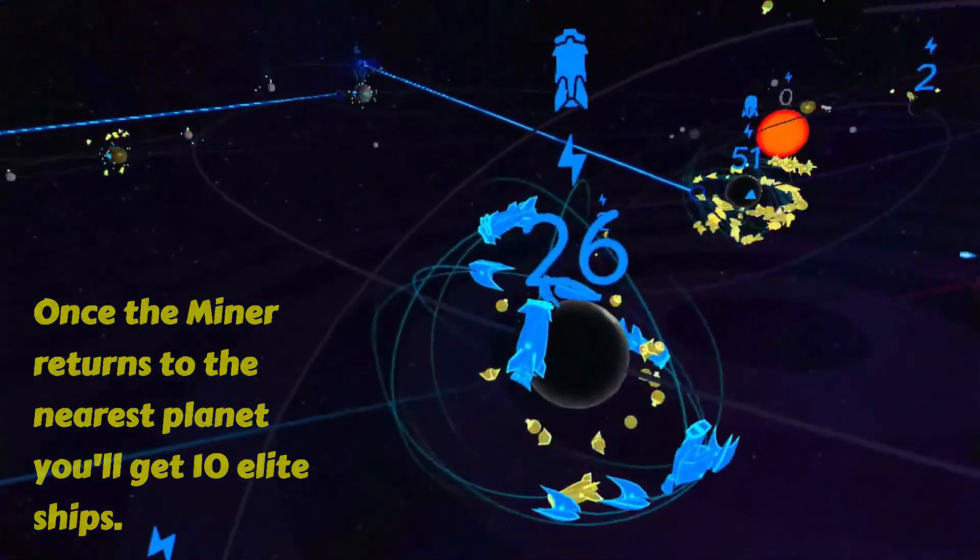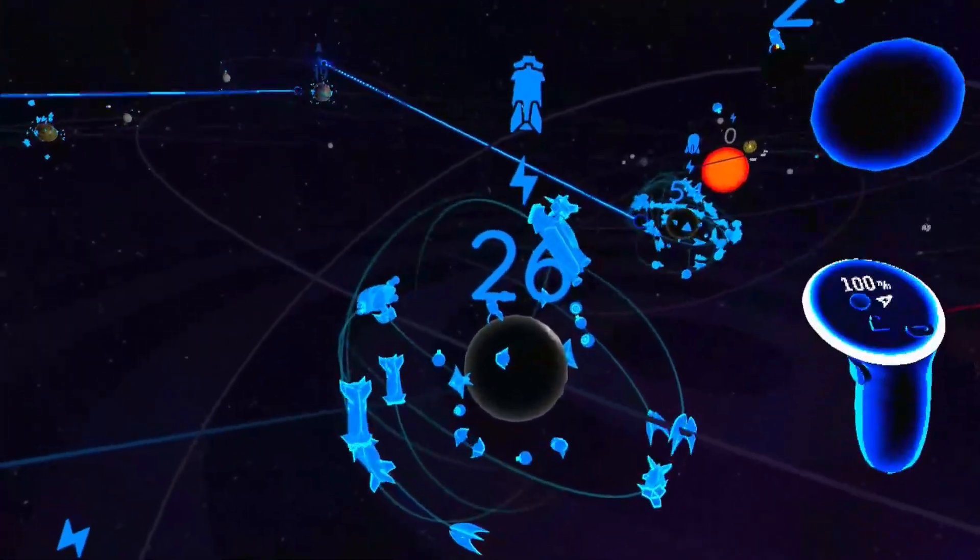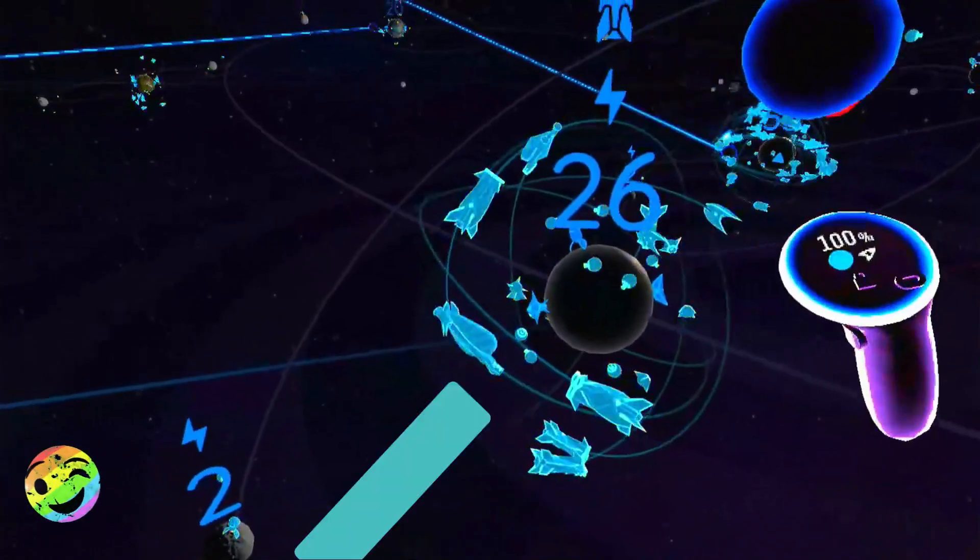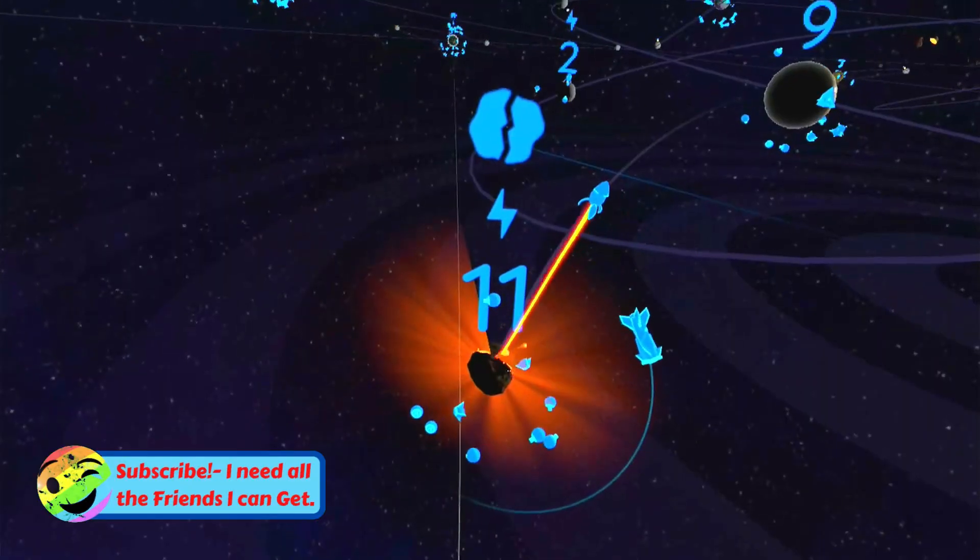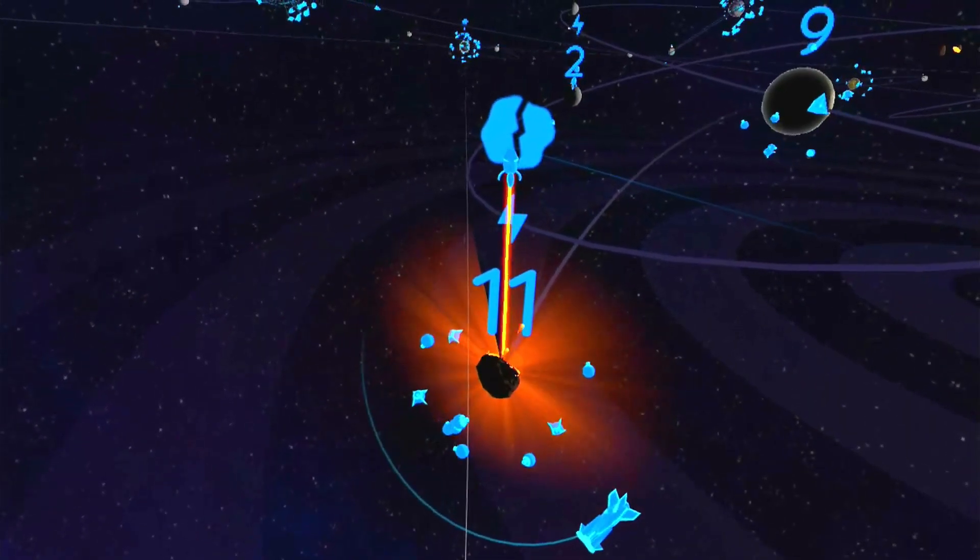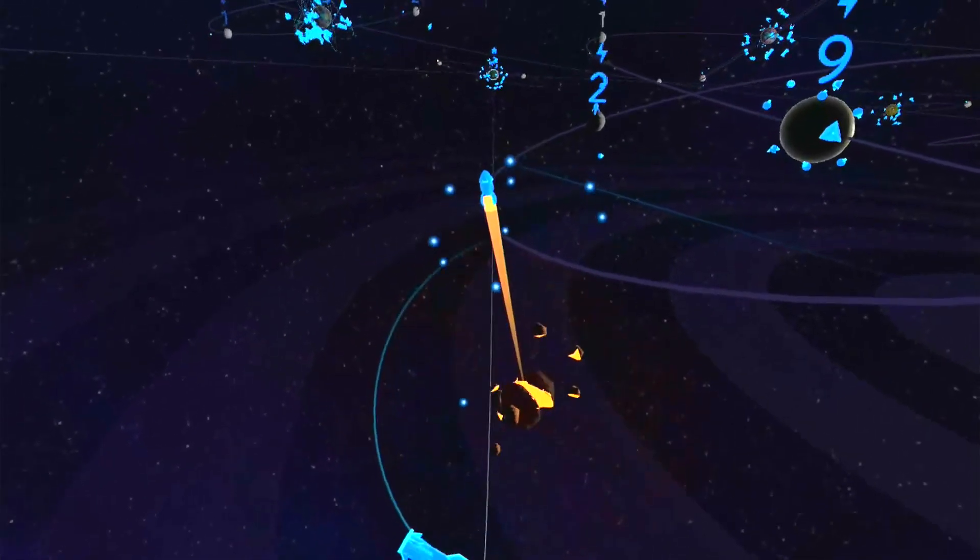In this case, it was 4 heavy laser ships, 3 torpedo ships, and 3 laser battleships. Now that I've given you the asteroid basics, here's some important tips that you need to know.